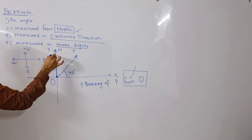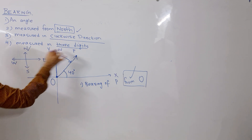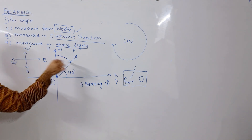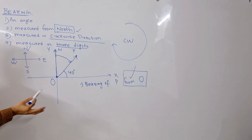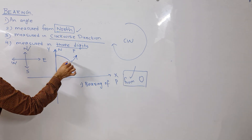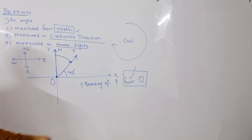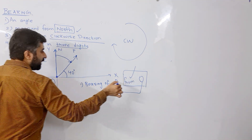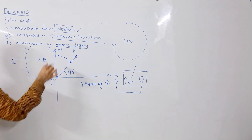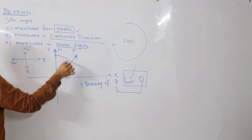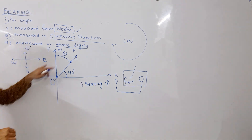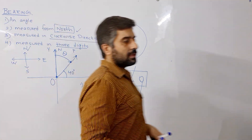Now you have to move in clockwise direction — this is the clockwise direction. But the important question is: for how much, and at which point do I need to stop? I will stop when I reach the intersection point with the line OP. The line joining these two points will be your ending point — starting from north, moving in clockwise direction, and stop at the line joining P and O. So this angle is your answer.